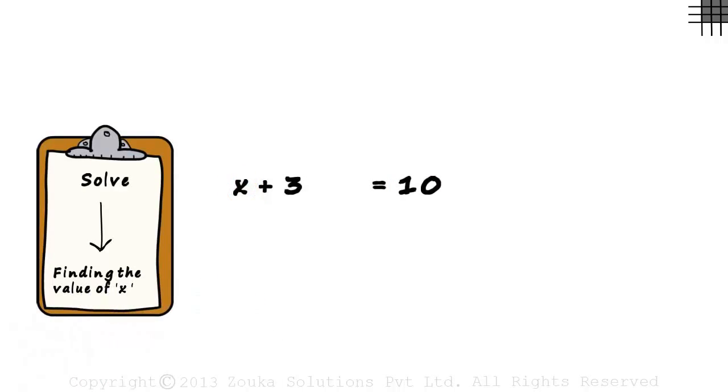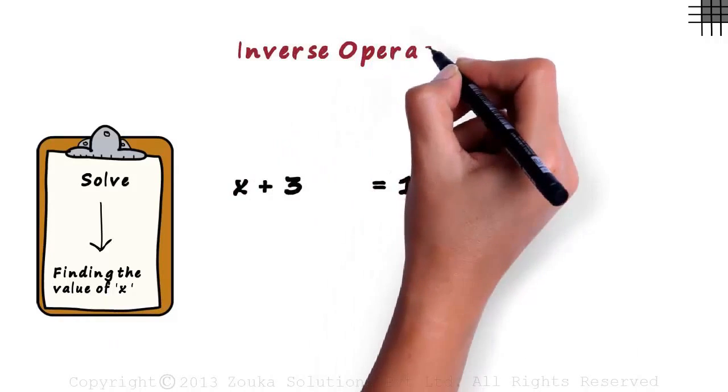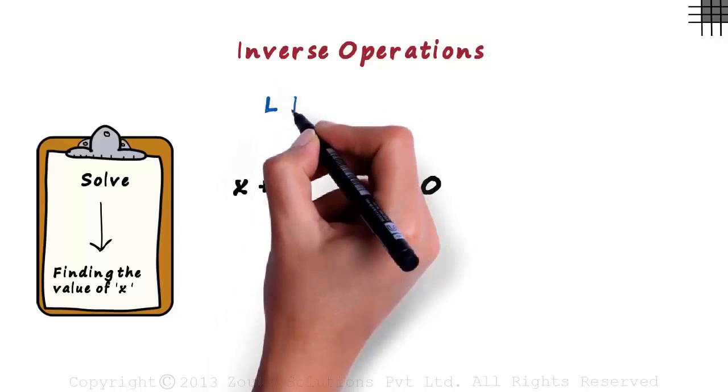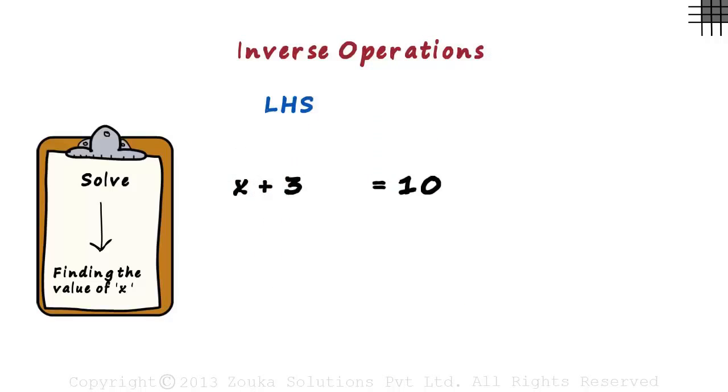The first method is the inverse operations method. Before you understand this method, we need to understand a simple concept. Whatever we do to the left-hand side, we do the same to the right-hand side.